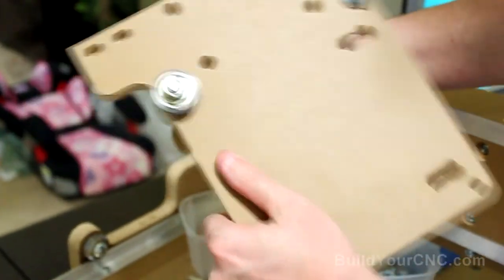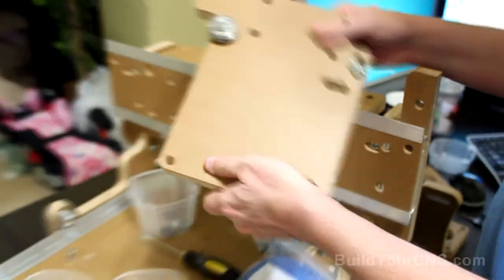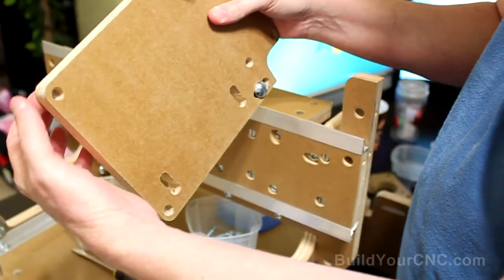Okay, this one's done. You can just hand tighten it so it still moves. And now we're going to put on the Y and Z bearings on this side.